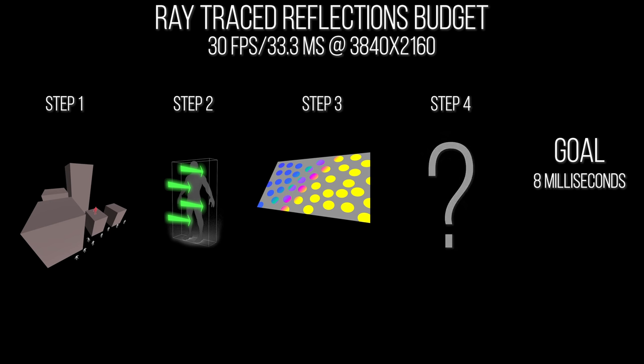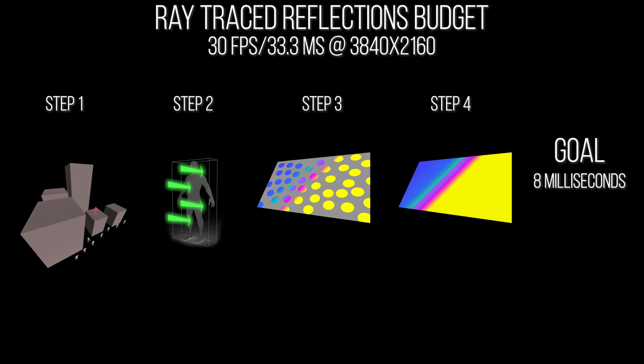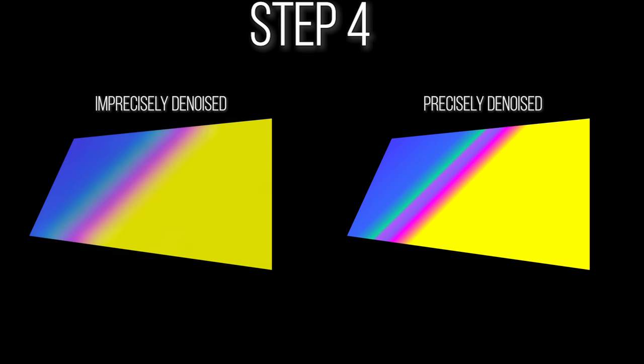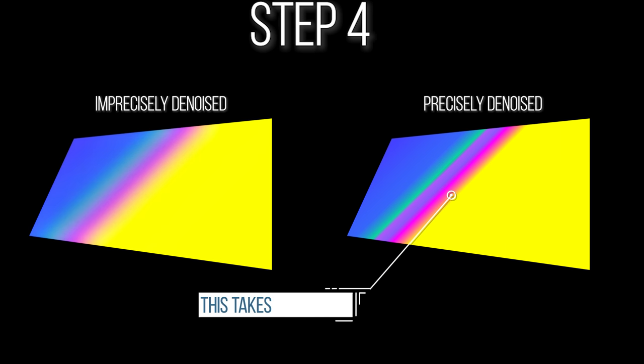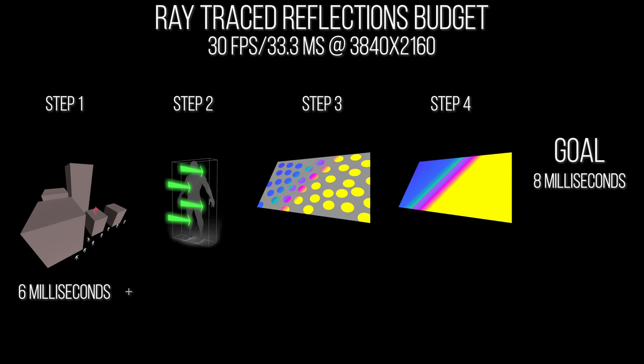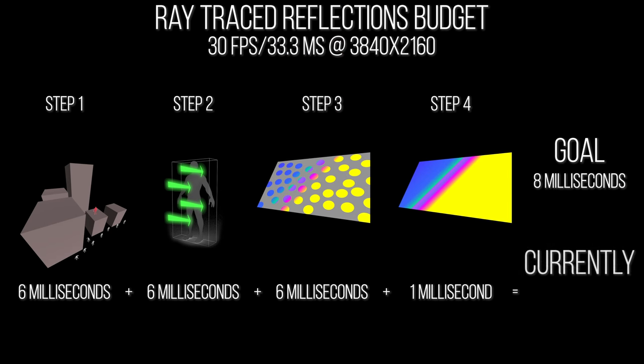Step three leaves us with colors and shades, but they can look ugly and noisy, so step four comes in and cleans that up. Typically, the more precisely step three is cleaned up in step four, the more milliseconds step four will need. With four steps and a total budget of eight milliseconds, we're nowhere near budget at the start, so we have to go in and tweak aspects of these reflections to reduce overall cost while still making sure reflections look good and fit our game design.